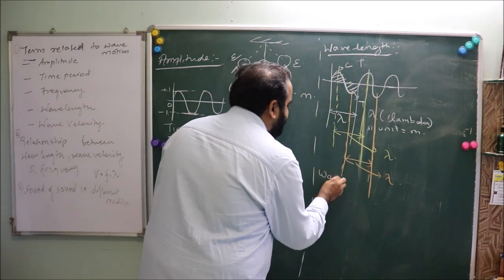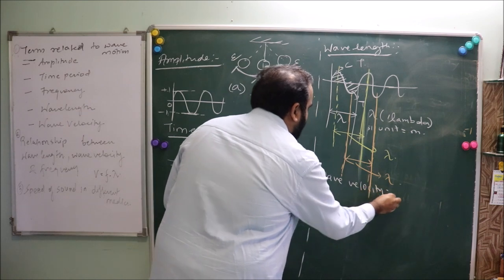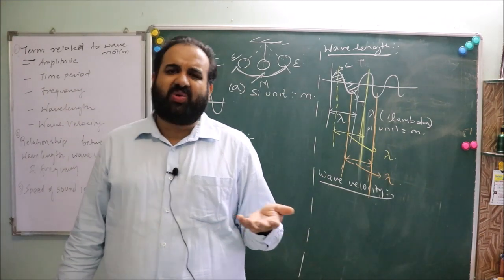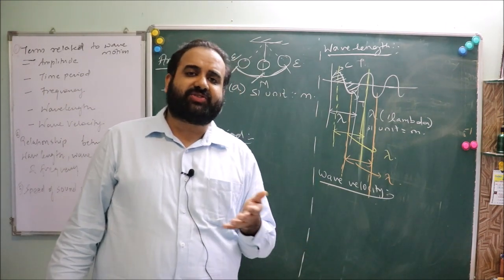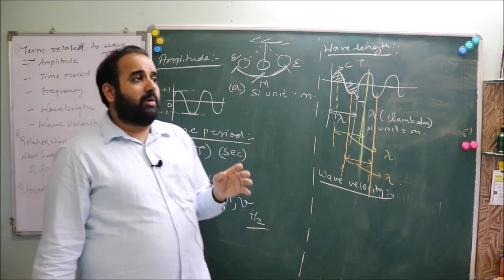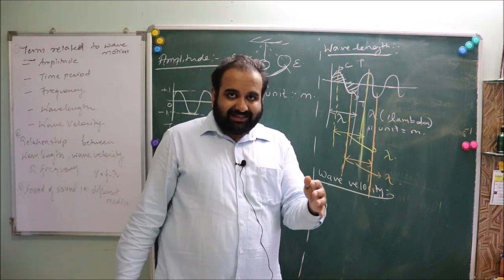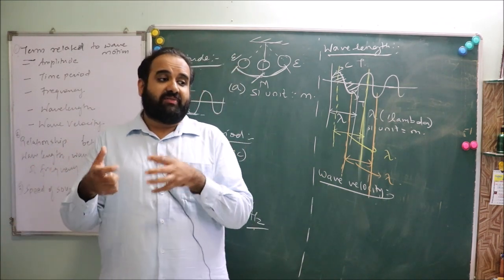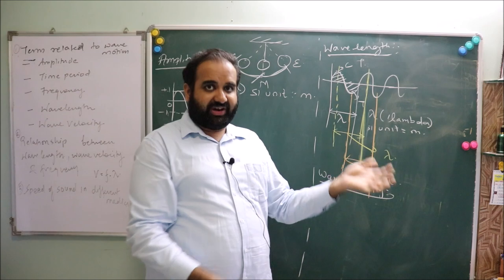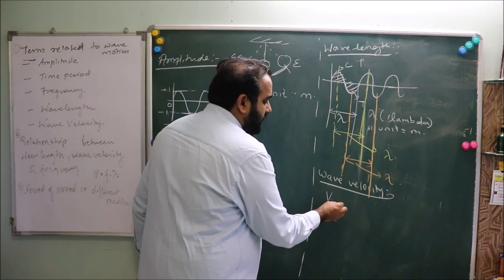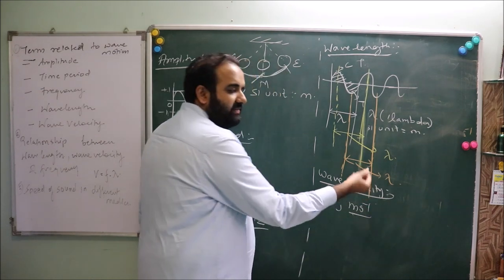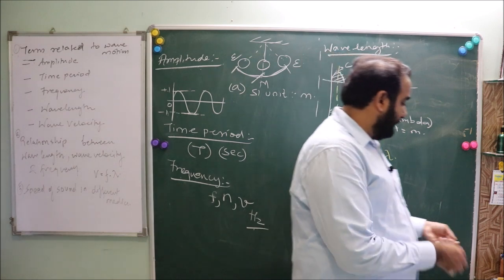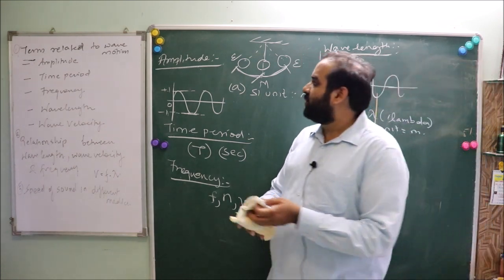The last parameter is wave velocity. Wave velocity is the distance traveled by the wave in one second. It is important to note that it is not the particle that is traveling — it is the energy being carried. The velocity with which this energy travels is called wave velocity, and its unit is meters per second.